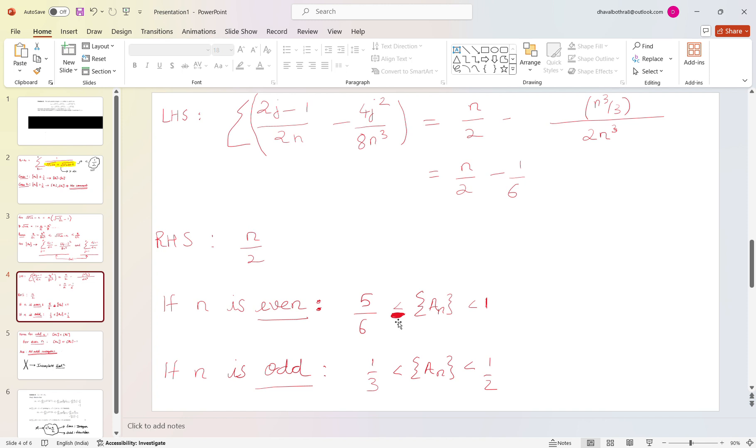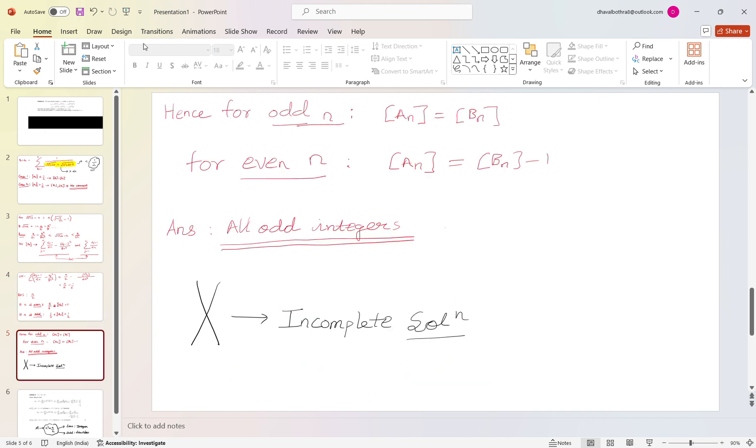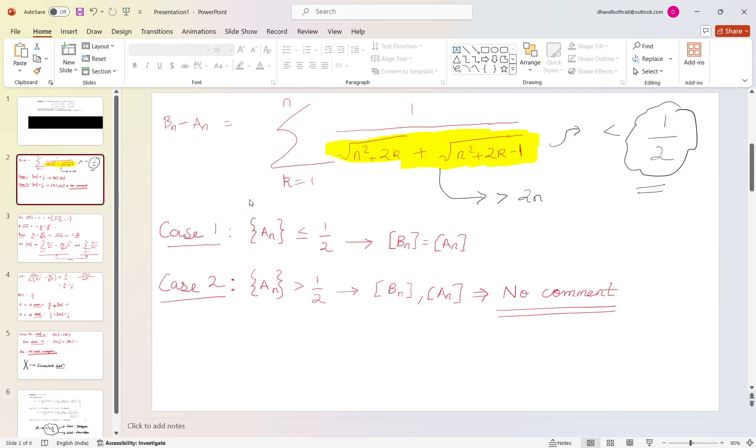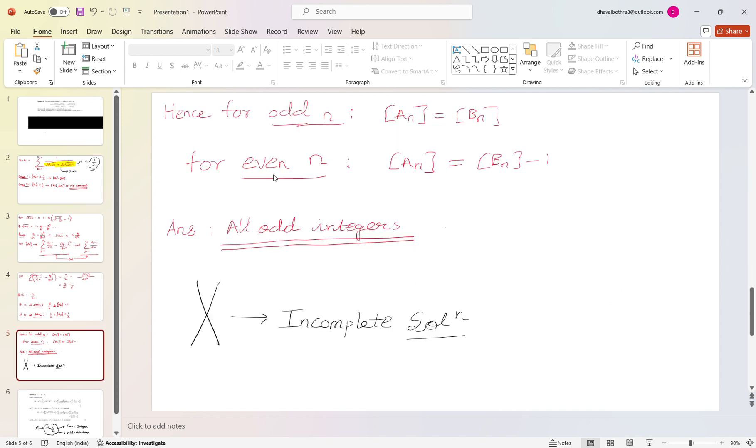So in that case fractional part of a_n is less than half, and hence I had concluded during that time that for odd n we have fractional part of a_n less than or equal to half and so floor of b_n equals floor of a_n. Now for even n I had just said that the floor of a_n will be equal to floor of b_n minus 1.